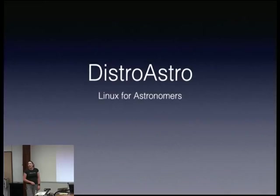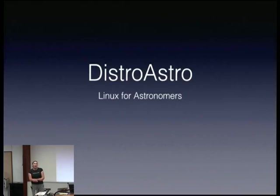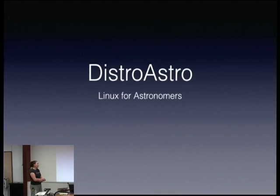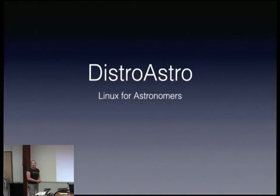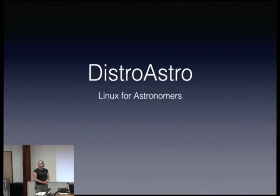I'm talking about DistroAstro, which is an Ubuntu-based distribution being put together specifically for astronomers. It incorporates software for professional astronomers, amateur astronomers, and armchair astronomers. There's a lot of really cool stuff in there. My aim today is to give you a basic introduction, bring it to your attention, talk a little bit about the project — where it is, what still needs to be done, what the resource limits are — and encourage people to get involved if they can.